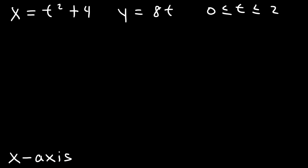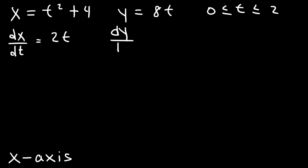So what do we need to do in order to get this answer? The first thing I recommend doing is finding dx/dt and dy/dt. So dx/dt is 2t, and dy/dt is 8.